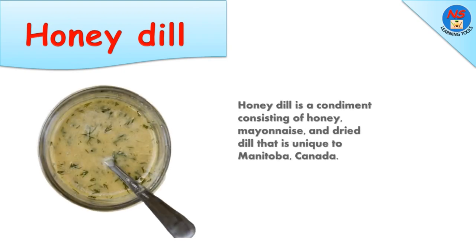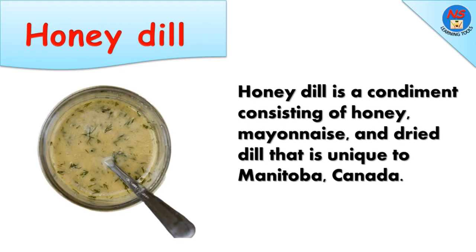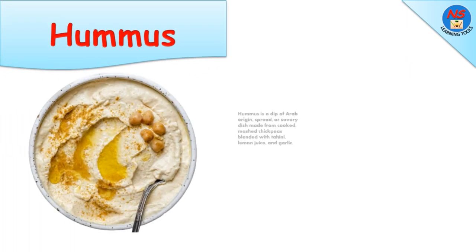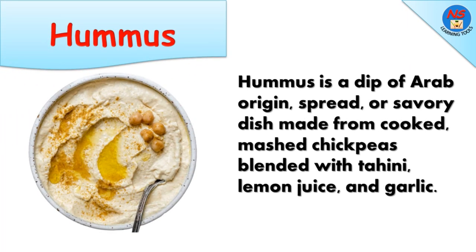Honey dill is a condiment consisting of honey, mayonnaise, and dried dill that is unique to Manitoba, Canada. Hummus is a dip of Arab origin — a spread or savory dish made from cooked mashed chickpeas blended with tahini, lemon juice, and garlic.